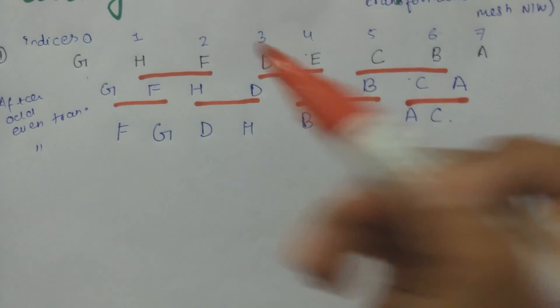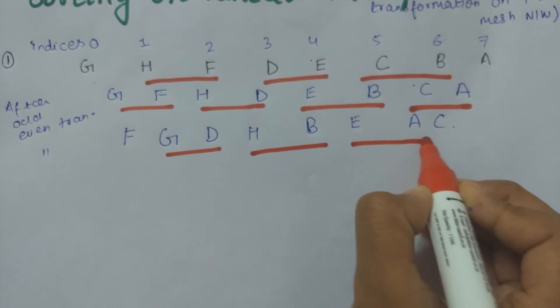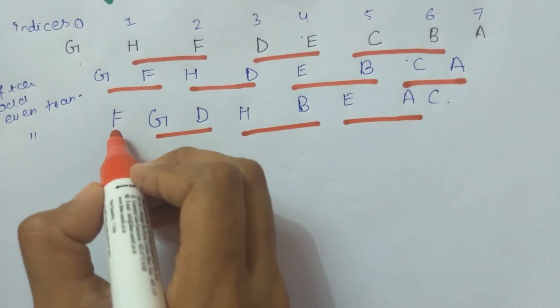Now the pair will be G-D, H-B, E-A, and we will leave C and F here.